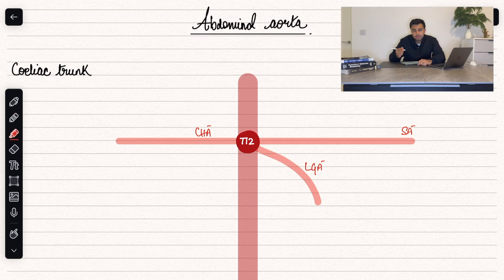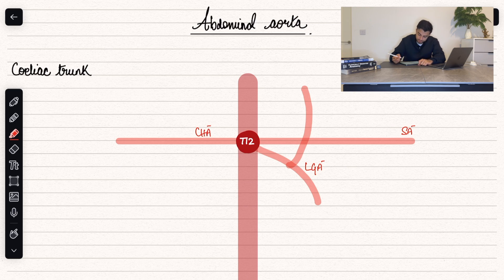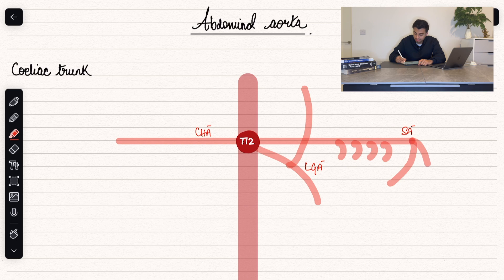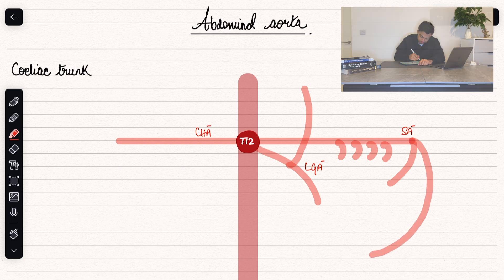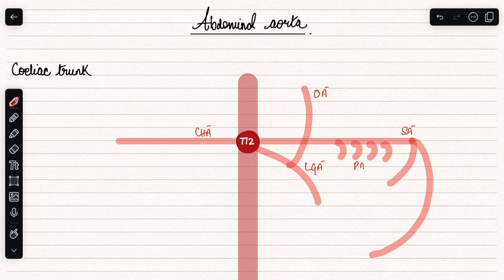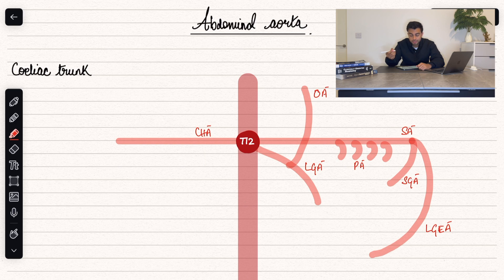The left gastric artery gives rise to the esophageal branches, which go proximally towards the esophagus. The splenic artery gives off branches to the pancreas along its route, and also gives rise to the short gastric arteries. Its main branch is the left gastroepiploic artery, which supplies the greater curvature of the stomach.